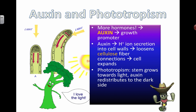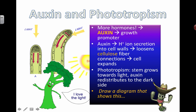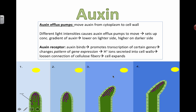Negatively phototropic — don't write that down in an essay. Here in more detail: there are little pumps called auxin efflux pumps. They're the pumps that are actually able to move to the dark side, and when they move there, it allows auxin to get through to the cells on the dark side. Once the auxin gets through, it binds to certain genes and promotes transcription of those genes, which changes the pattern of gene expression. The hydrogen ions are then secreted into the cell walls, causing the cellulose fibers to become loosened, and the cells expand.